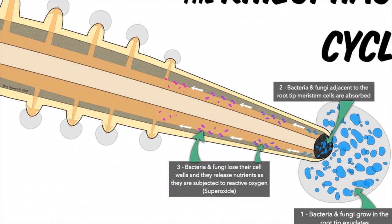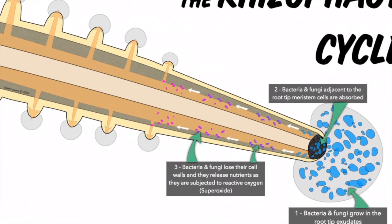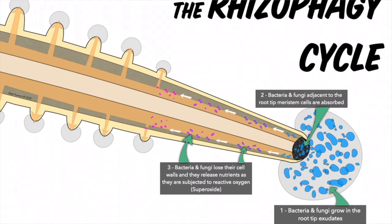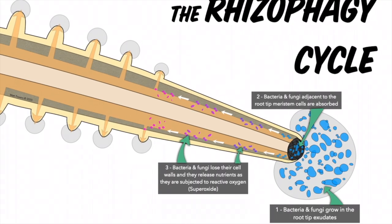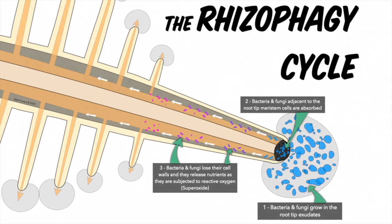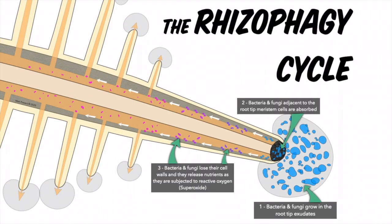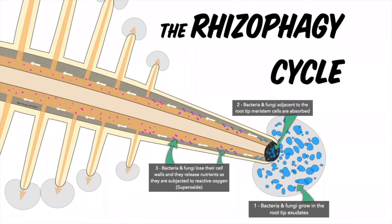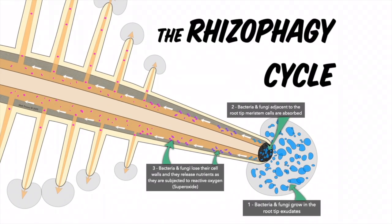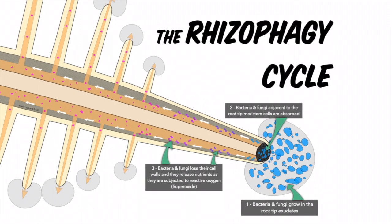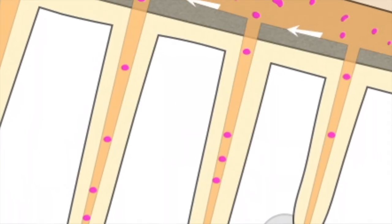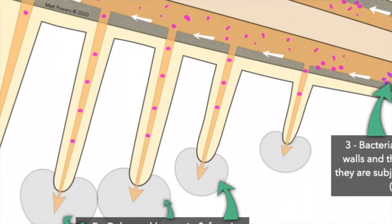All these microbes are releasing ethylene, which is a stress hormone, but it's also a growth hormone. In this situation, what it's doing is promoting root hair growth. In fact, without microbes, root hair growth is impossible — let that sink in. So they're releasing ethylene, it's promoting root hair growth, and as they're traveling up and down circulating in the root hairs...